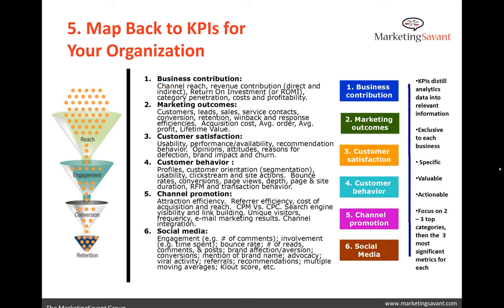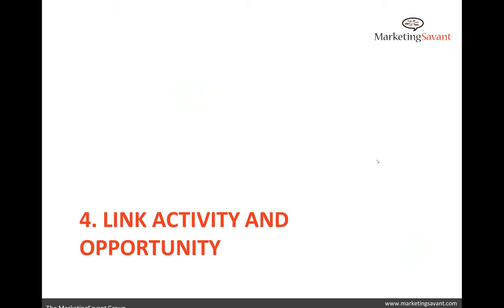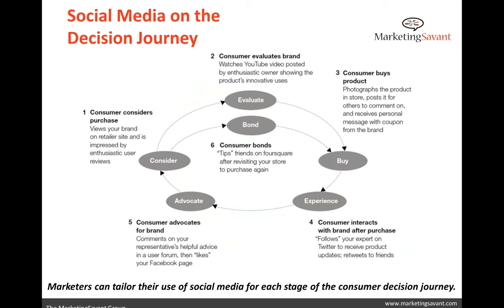The last couple of points are about linking our activity and our opportunity. Taking things up a level, we also want to understand through our social media metrics where people are at in the decision journey. A lot of organizations are using this as a burning platform for change to affect different marketing strategies — doing studies on the customer decision journey or path to purchase, really trying to understand where social media fits into that. One through six you can see: people first considering purchasing, interacting, becoming an advocate, and ultimately becoming a long-term advocate.